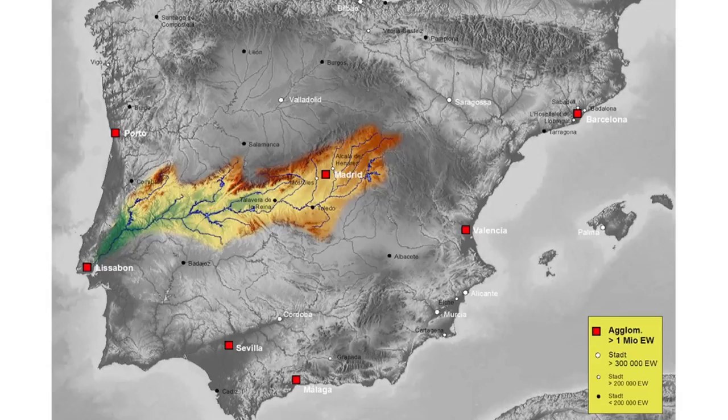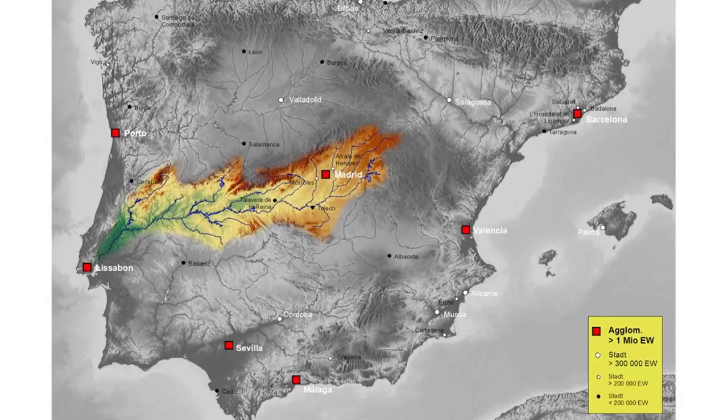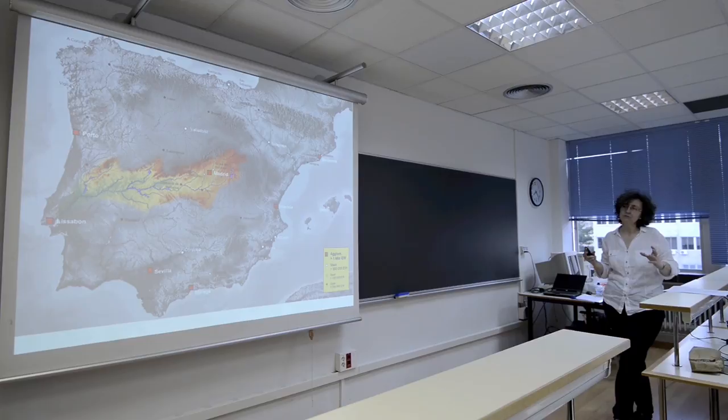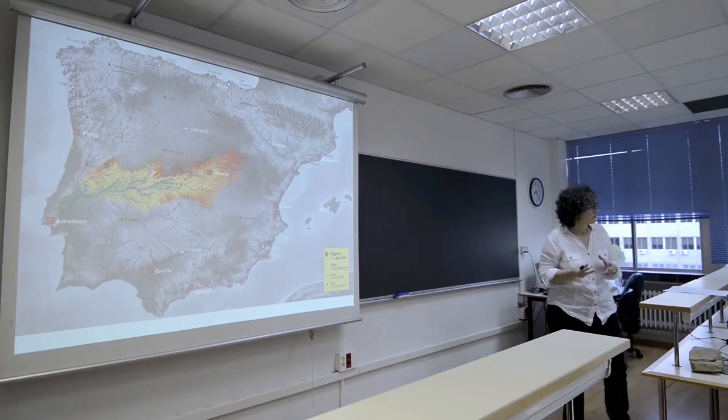This is the Tagus River — Tejo for Lisbon, for the Portuguese people, and Tago, a very strong name for us. You can see that you are coming from a relatively humid environment to another dry environment.